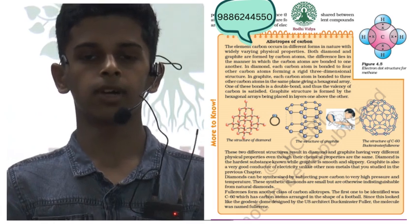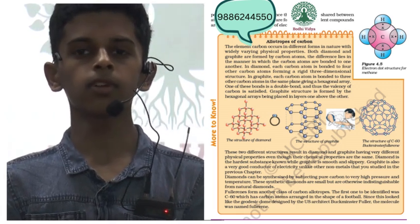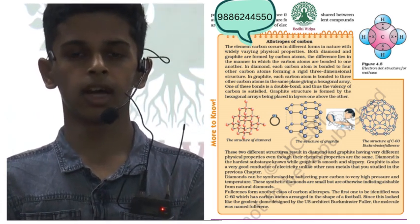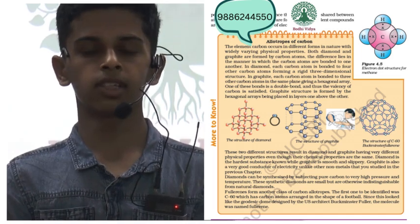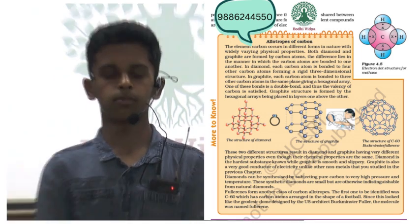Diamond and graphite as you all know are made up of carbon atoms. The difference that lies between them is in the manner by which the carbon atoms are bonded.